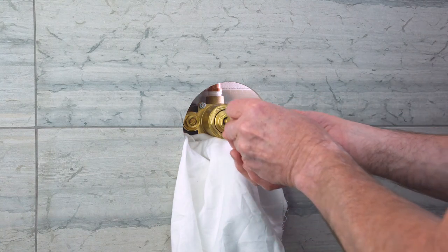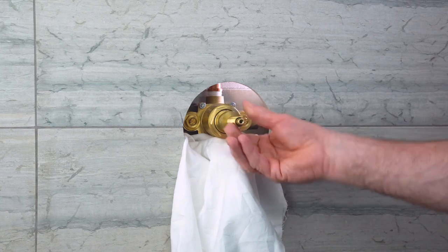Screw the existing off-thread with centering sleeve back onto the valve hand tight.